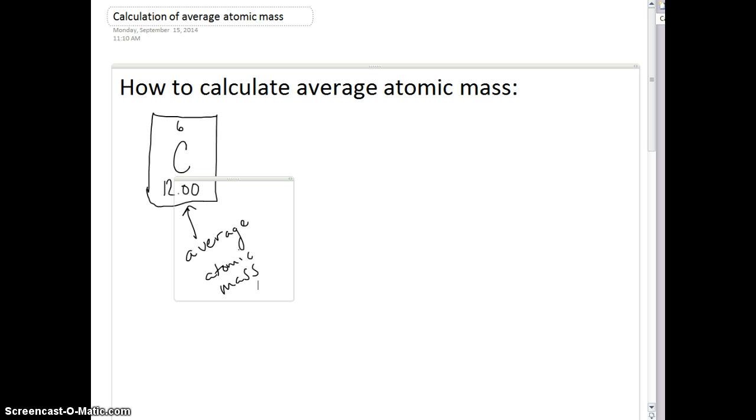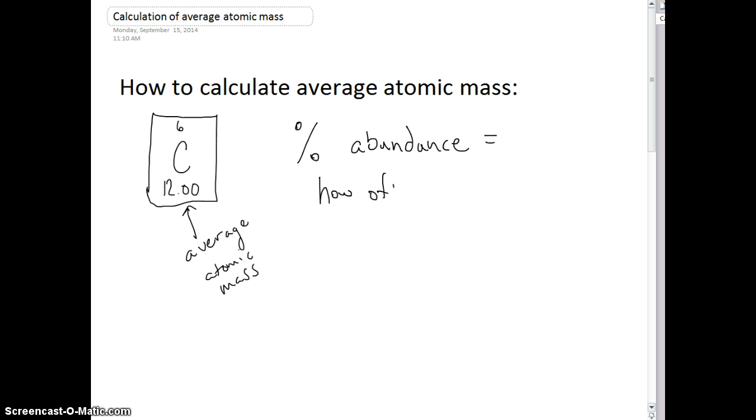What a weighted average means is that we have different isotopes, and these different isotopes have different percent abundance. And what percent abundance is all about is it tells us how much, how often we find these isotopes out in nature. And yesterday, we did talk about isotopes, and you do hopefully remember that those isotopes are the same atom, same number of protons, but we have different number of neutrons.